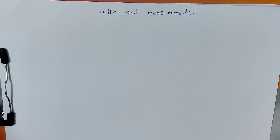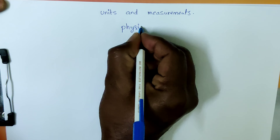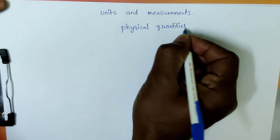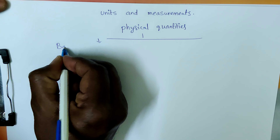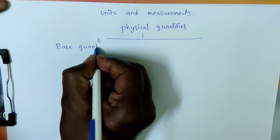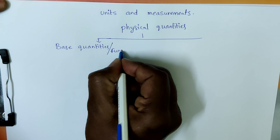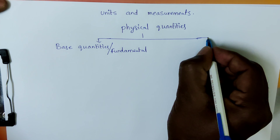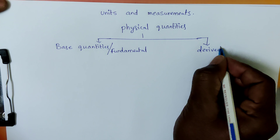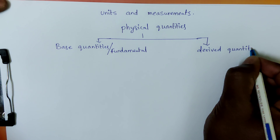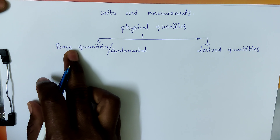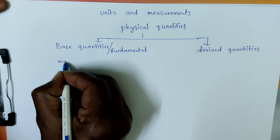There are a large number of physical quantities that exist in the world, but we cannot have units for all individual physical quantities separately. So we categorize physical quantities into two types: base physical quantities, also called fundamental quantities, and derived quantities, whose units we derive using the units of base quantities. The base quantities are mass, length, time, amount of substance, luminous intensity, electric current, and temperature.